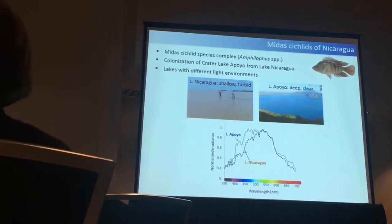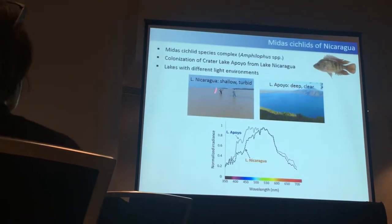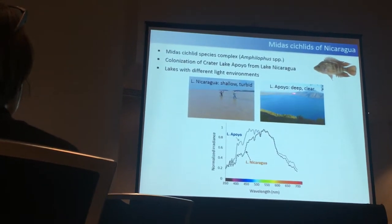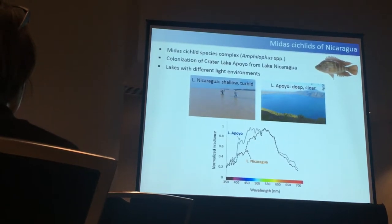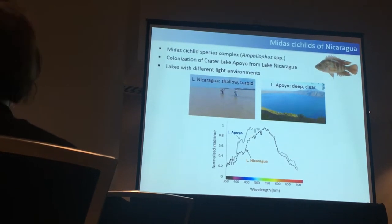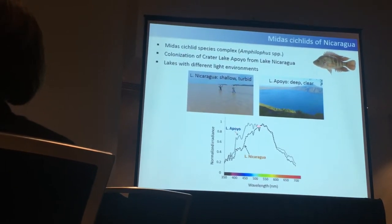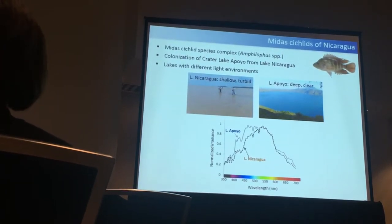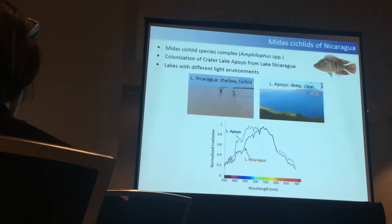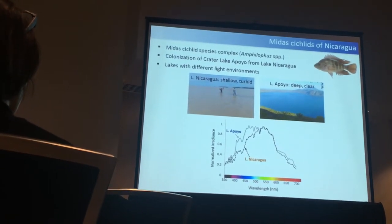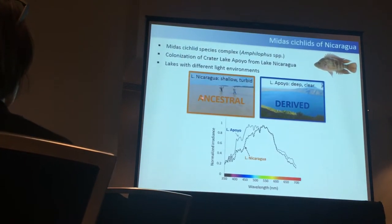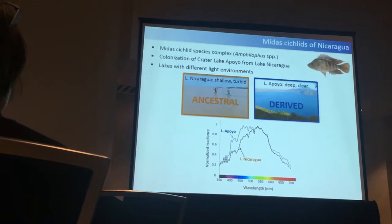The light environments of those lakes differ quite a bit. Lake Nicaragua is very shallow and the water is quite turbid, whereas Lake Apoyo is much deeper and the water is relatively clear. When you look at the light spectrum, Lake Apoyo is shifted more towards shorter wavelengths — so there's more blue light available. Since Lake Apoyo was colonized from Lake Nicaragua, I will call the Lake Nicaragua species the ancestral species and the Lake Apoyo species the derived species.